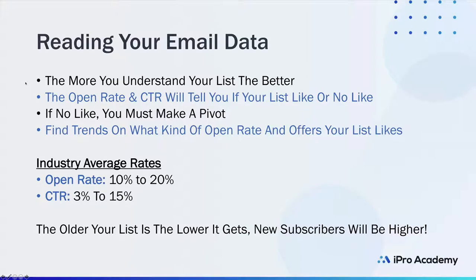You should be emailing different offers at different times and different pricing — solo ads, CPA products, or whatever. The next thing you need to do is really read your email data. The more you understand your list, the better your business will be. Open rate and click-through rate will tell you if your list likes or dislikes the product or content. If your open rate and CTR are really bad, pivot to something else right away and find what kind of offers your list likes.